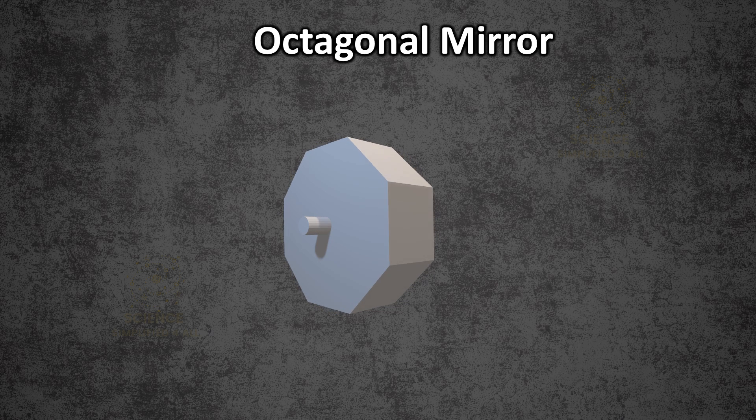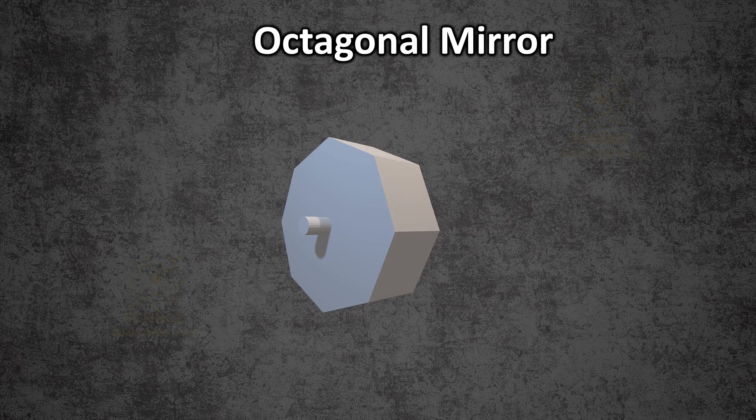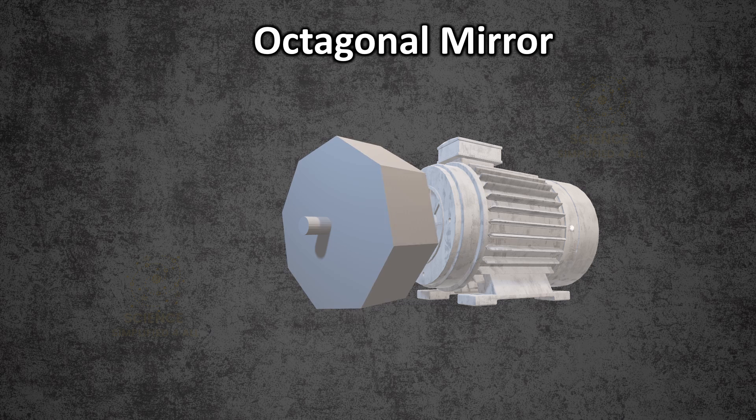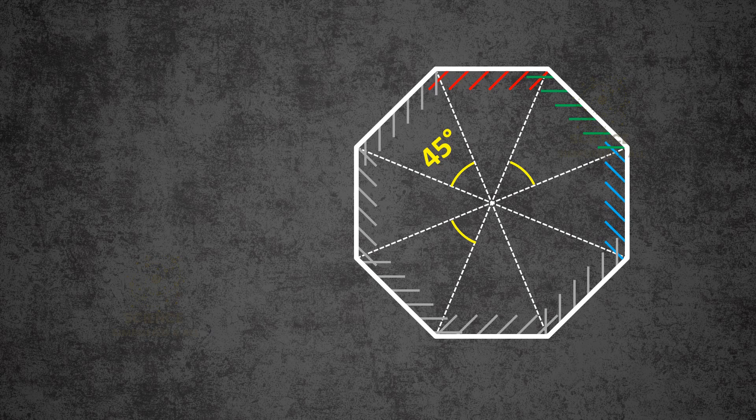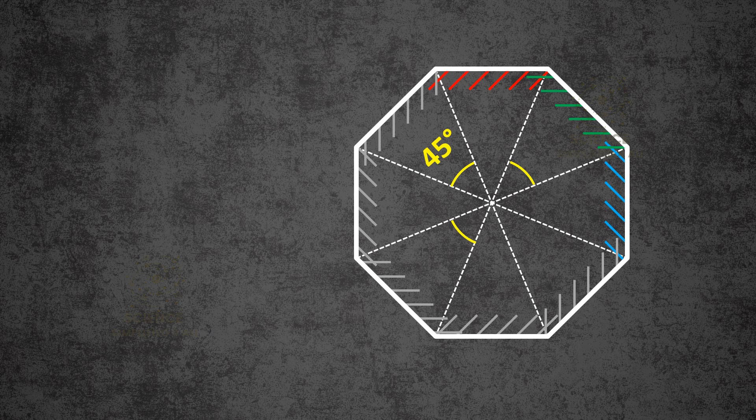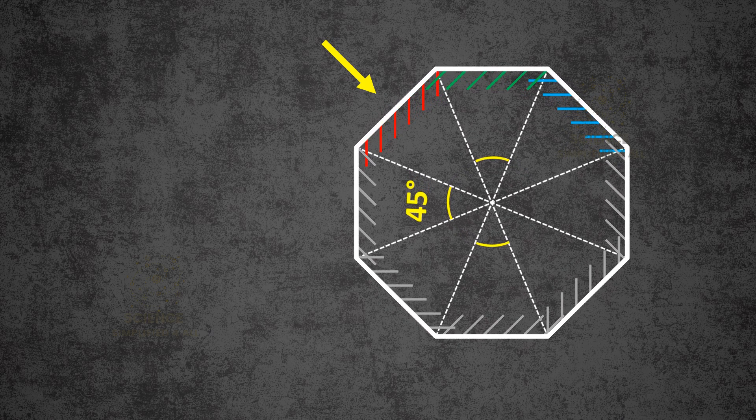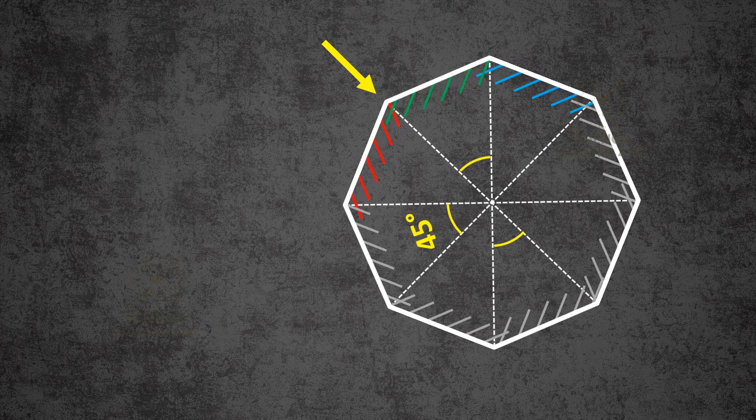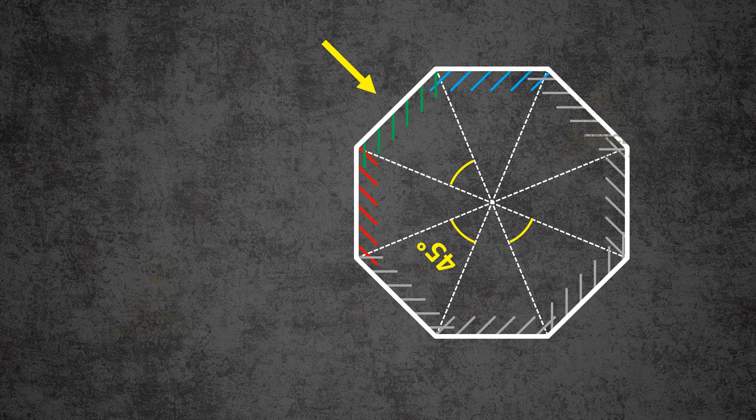This is the model of the octagonal mirror that Michelson used. Each of its eight sides is a reflective mirror and the entire structure is mounted on a rotating shaft connected to a motor. The speed of the motor can be precisely controlled and measured. The specialty of an octagonal mirror is its symmetry. Each side forms a 45-degree angle with the center. If you rotate the mirror exactly 45 degrees, the next side moves into the same position and the mirror looks identical. This feature is key to Michelson's ingenious experiment.